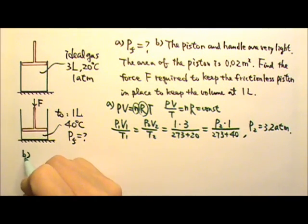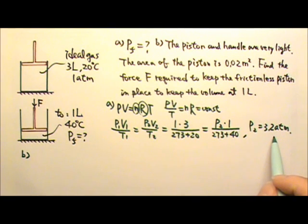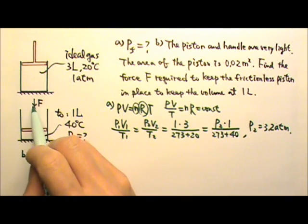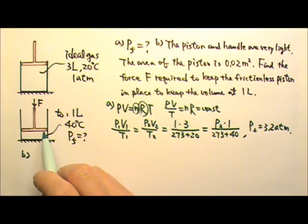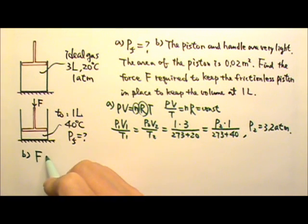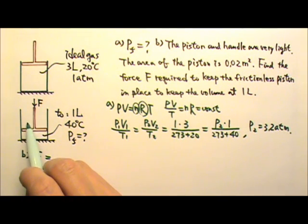For part B, this pressure is higher than the atmospheric pressure, so it requires a force to keep the piston in place. The force required is the force that has to overcome the force produced by the pressure difference. Higher pressure inside, lower pressure outside.